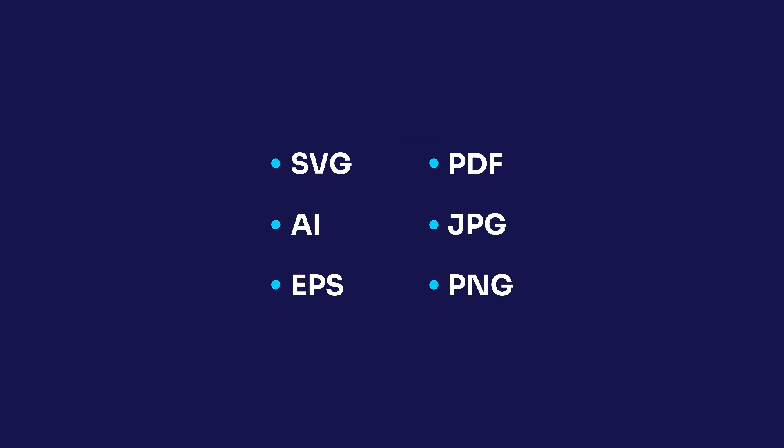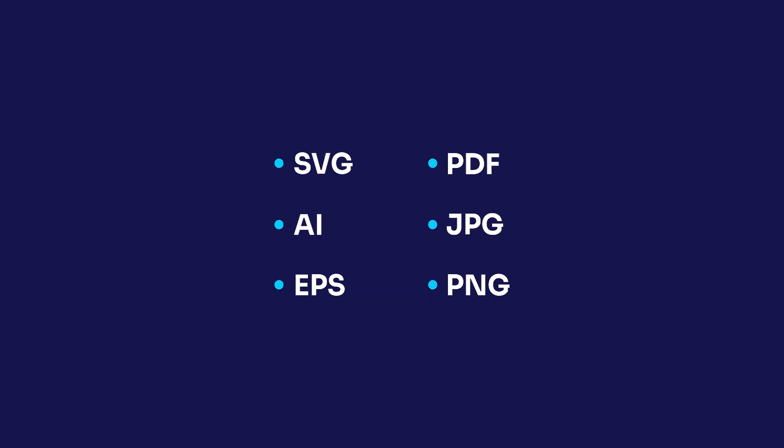The next format is JPG, which is an image file. And lastly we have PNG, which is also an image file but a transparent one. Without any further delay, let's proceed to create the final files for the logo design.